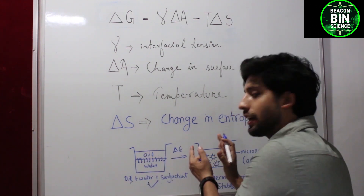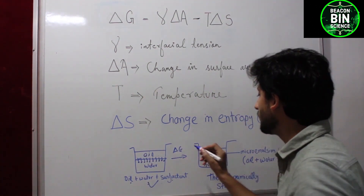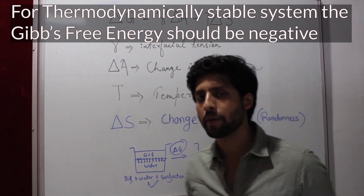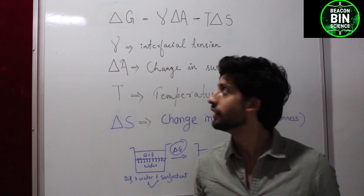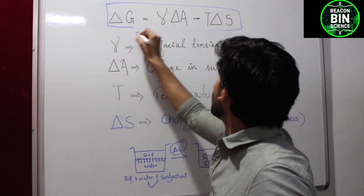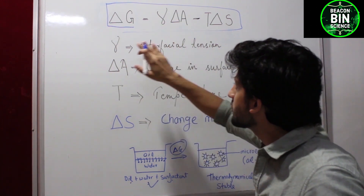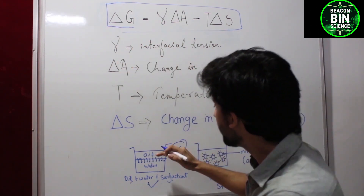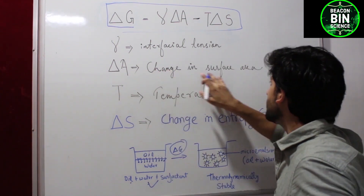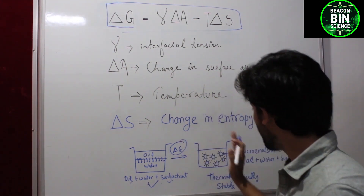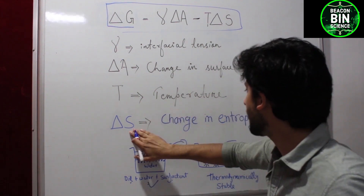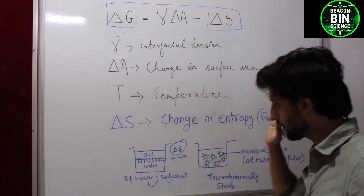In order to move forward in the formation of the microemulsion, the delta G value should be negative. Delta G is a thermodynamic term — the Gibbs free energy. Here you can see the equation: Gibbs free energy delta G equals gamma times delta A minus T times delta S. Gamma is the interfacial tension between oil and water, delta A is the change in surface area after formation of the microemulsion, T is temperature, and delta S is the change in entropy of the system.